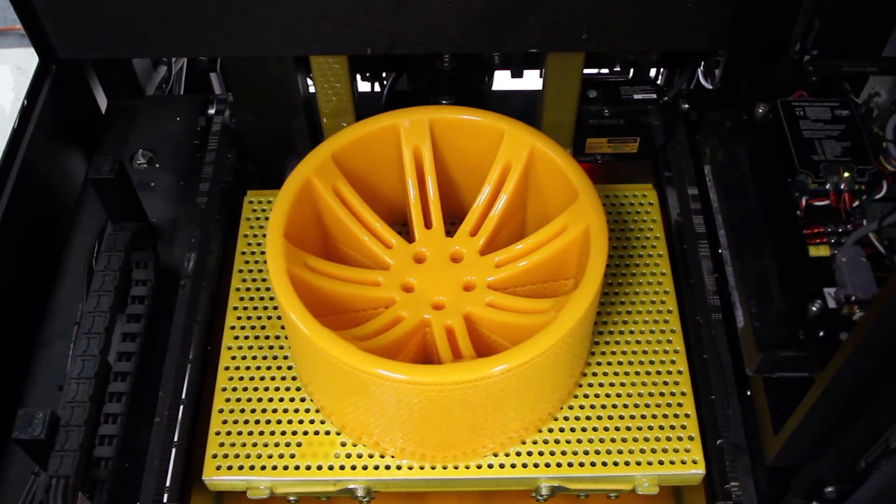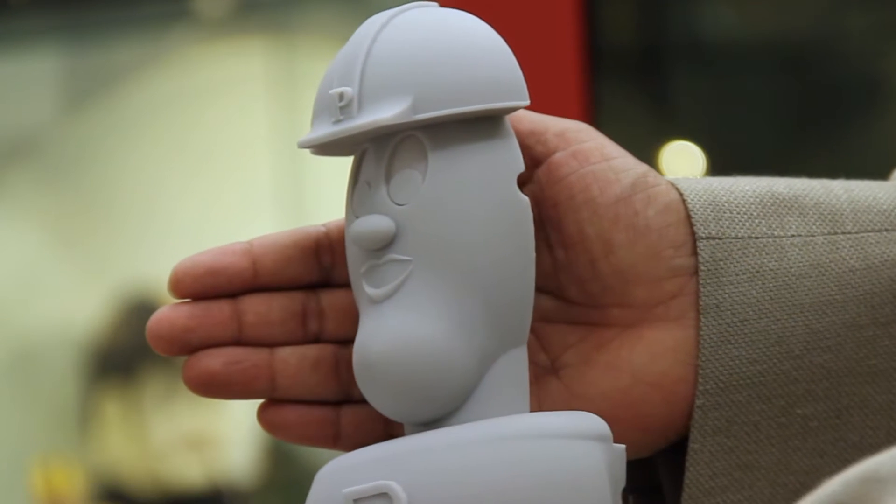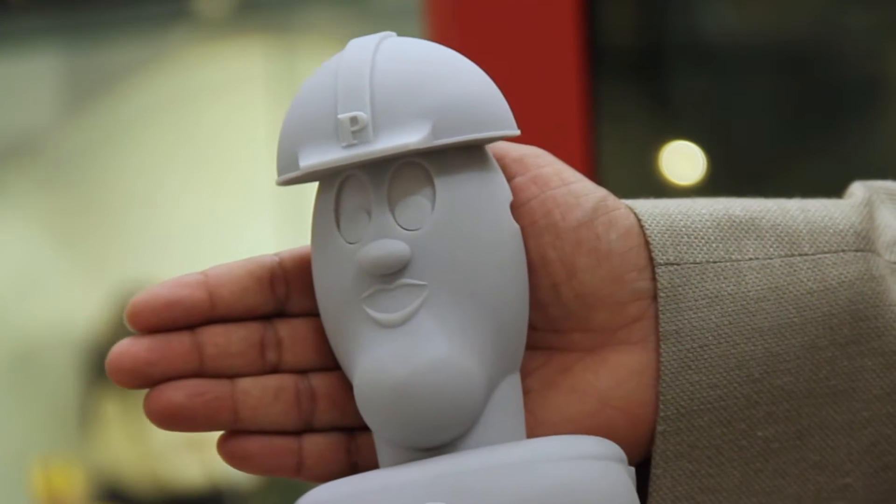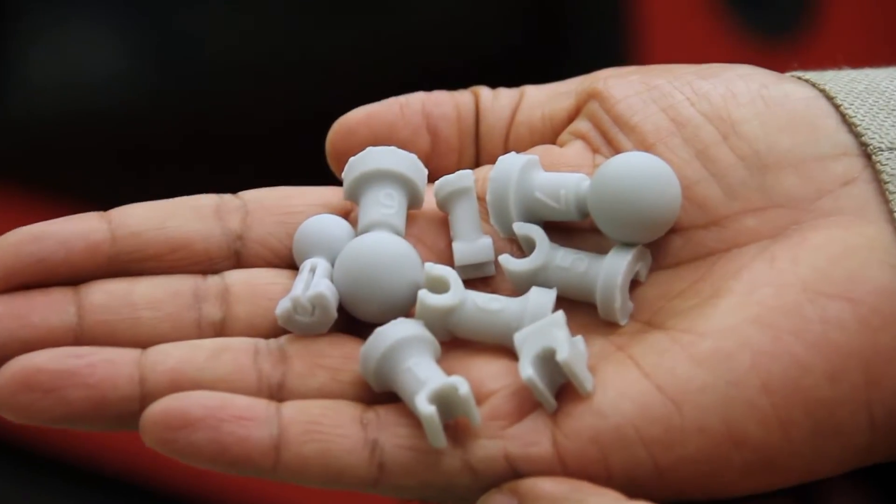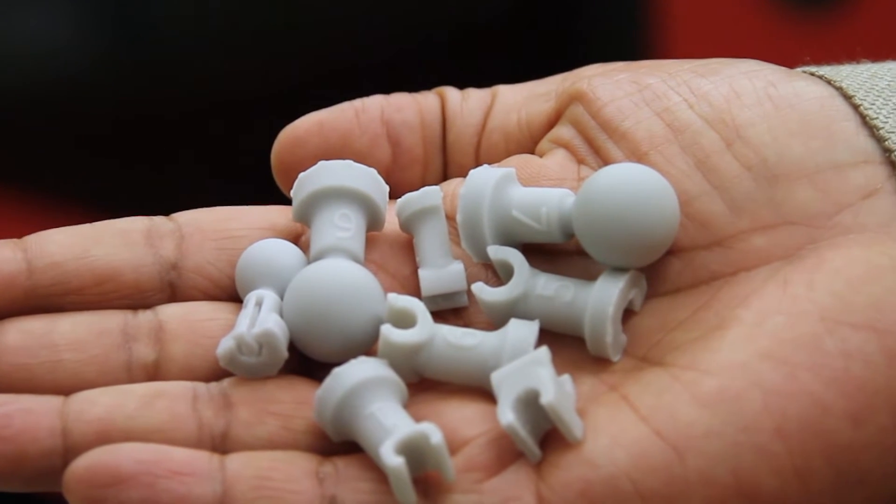You can see here our school mascot, Purdue Pete, which has been produced by the machine with a very high level of detail of the features. Also you can see highly precise parts which are very small that can be produced with accurate detail and very high precise tolerances.